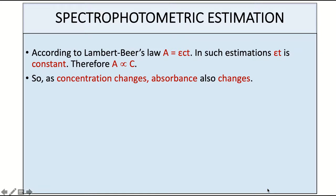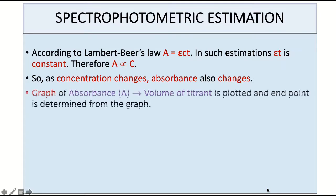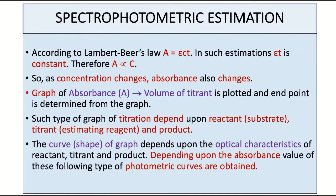As the concentration of the solution changes, the absorbance value will also change. By plotting a graph of absorbance versus volume of the titrant, the endpoint is determined from the graph and hence we can determine the concentration of the unknown solution. The shape of such a graph depends upon the reactant, titrant, and product.